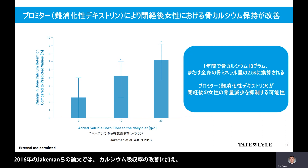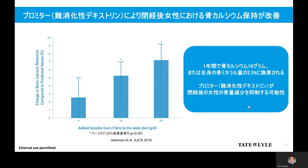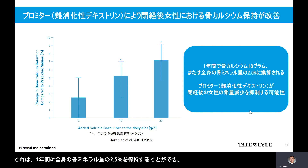Besides better calcium absorption, Jackman and colleagues also published a paper in 2016 reporting that just 10 grams of soluble corn fiber Promitor was able to increase calcium retention in postmenopausal women. Based on calculation, this demonstrated that 2.5% of total body bone mineral content can be retained in a year, reducing bone density loss in postmenopausal women.